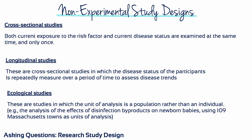In cross-sectional studies, both current exposure to the risk factor and current disease status are examined at the same time and only once. These are snapshots of the relationship between the risk factor and the disease. Longitudinal studies are cross-sectional studies in which the disease status of the patient is assessed repeatedly over a period of time, which can help to establish disease trends in a population.